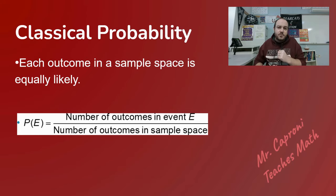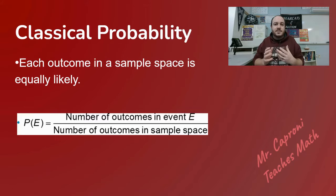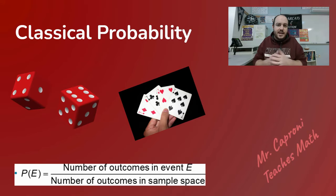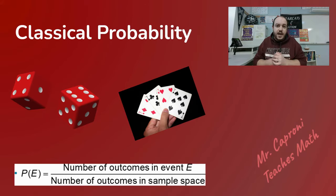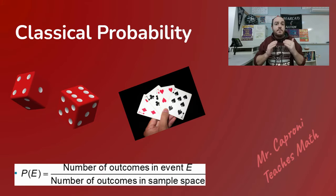To find classical probabilities, you need to find the total number of outcomes in the sample space and put that on the bottom of a fraction. On the top you put the number of outcomes in your event. For example, if you roll two dice and want to know the probability that the sum is an even number, you list all possible outcomes on the bottom, count how many are even on top, and dividing those gives you your probability — expressed as a fraction, percent, or decimal.